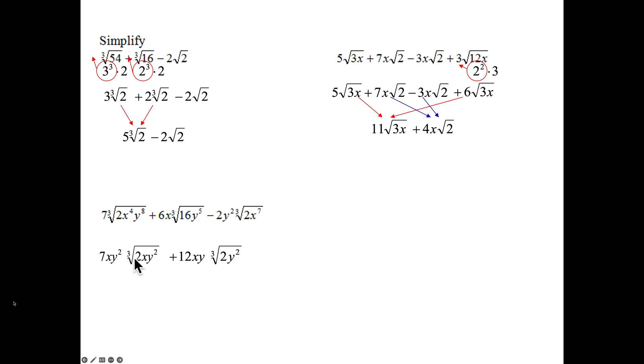Okay, these are not like terms so far. xy squared, xy to the 1st. 2xy squared, 2y squared, missing an x. Then we have the cube root of 2x to the 7th. 3 goes into 7 twice. So we'll bring out an x squared with 1x left over. Again, none of these are like terms or like radicals. So that's my simplified final answer for this one right here.